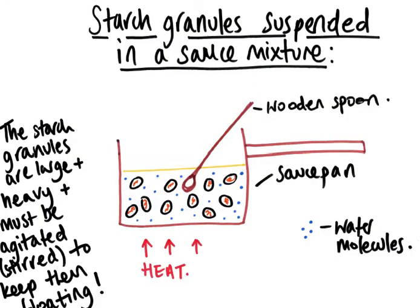Now, we've got the sauce mixture created. There's liquid in the sauce, usually in the form of milk, water, or stocks — these are water-based liquids — alongside some other things, for example flavourings like butter or soy sauce, sugar, that kind of thing. But the main thing to remember is we've got starch granules, which are very big because they've got all these starch molecules coiled up inside, and they are suspended within the sauce.